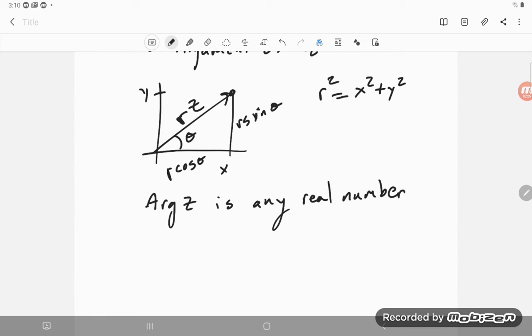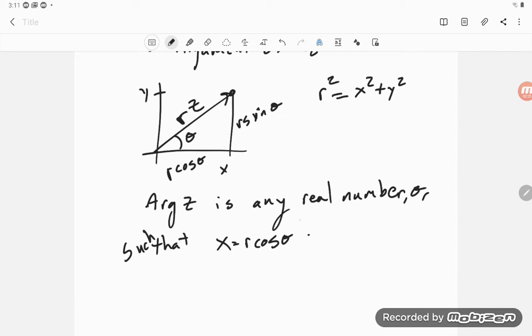Such that x equals r cosine theta, any real number theta. So x equals r cosine theta and y equals r sine theta.